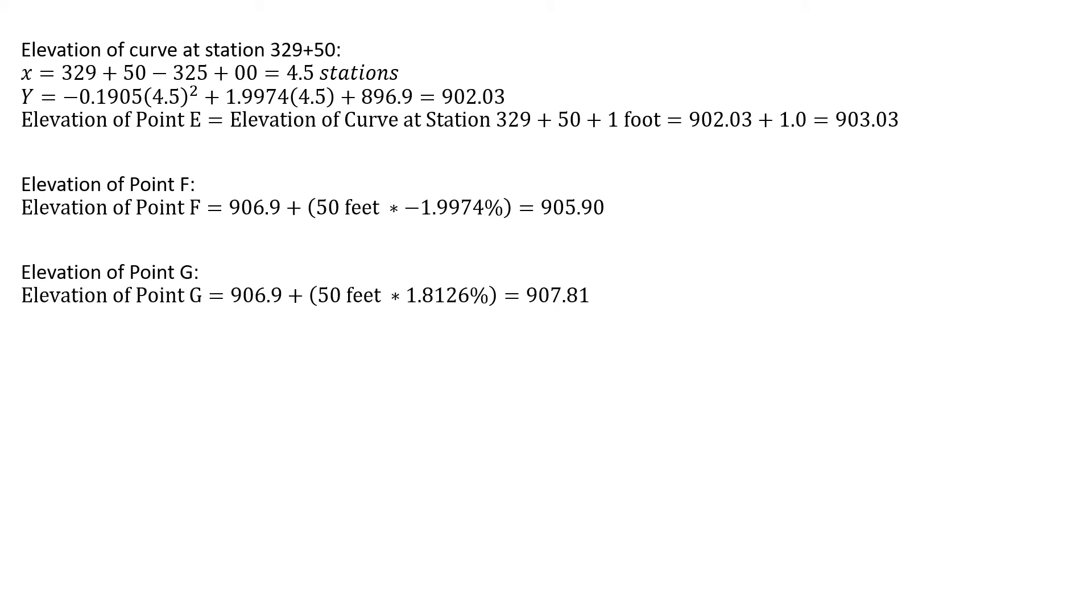The elevation of point G. We're going to start at our PVI, same as we did with point F. It's 50 feet away, similarly. And now the grade, though, is our other grade of 1.8126%. We're going to get an elevation of 907.81 feet.